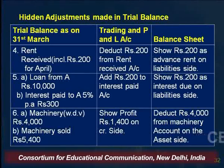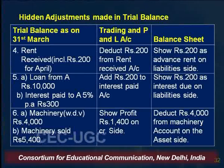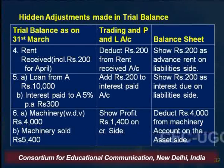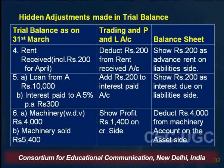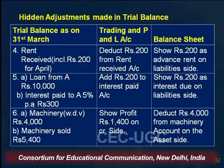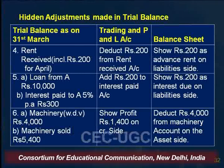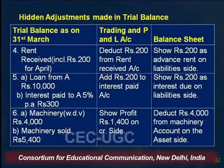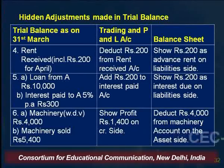Sometimes a loan from A or B of rupees 10,000 is given in the trial balance with a rate of interest and interest paid. If the total loan is rupees 10,000 at 5 percent, the interest comes to rupees 500, but only rupees 300 is paid. So rupees 200 will be added to the interest paid account and shown on the liability side of the balance sheet. Regarding machinery: if the written-down value of machinery is rupees 4,000 and it was sold for rupees 5,400, there is a hidden profit of rupees 1,400, which will be shown on the credit side of the Profit and Loss Account, and the WDV of rupees 4,000 will be deducted from the asset side of the balance sheet.